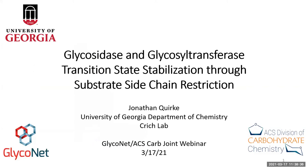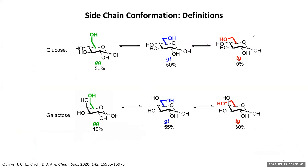Before we get to that portion of the talk, I want to go through the different side chain conformations that sugars can take up. Sugars can take up one of three different staggered side chain conformations. The first is the gauche-gauche or GG conformer, where the side chain is gauche to the ring C5-O5 bond and gauche to the ring C4-C5 bond. The second is the GT or gauche-trans conformer, where the side chain is gauche to the ring C-O and trans to the ring C-C. And the third is the TG conformer, which is vice versa.